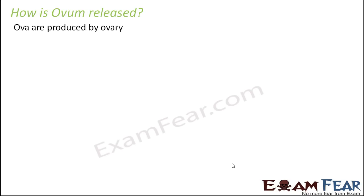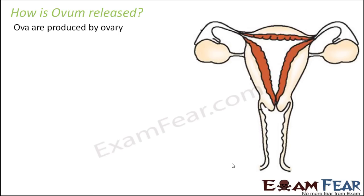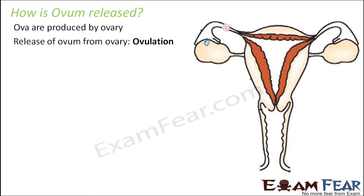This process is again very important — the process by which an egg is released by the ovary. The ovum is produced inside the ovary, and after that it gets released. This release of ovum from the ovary is known as ovulation.